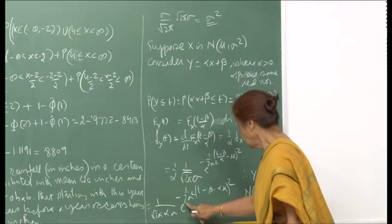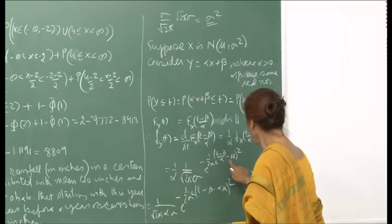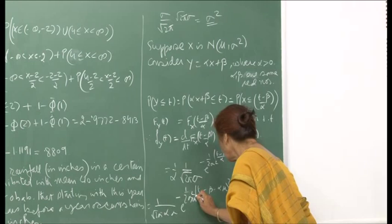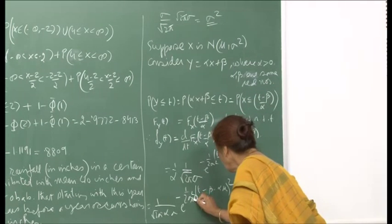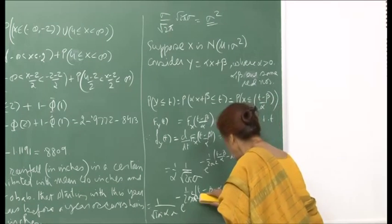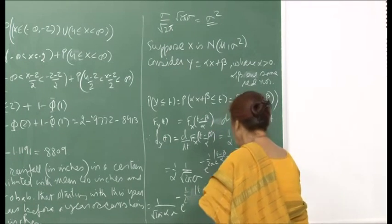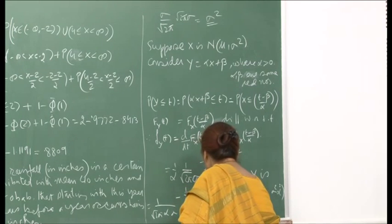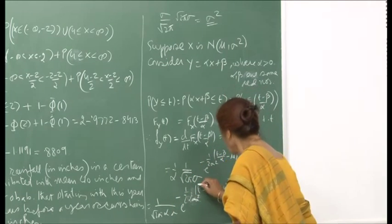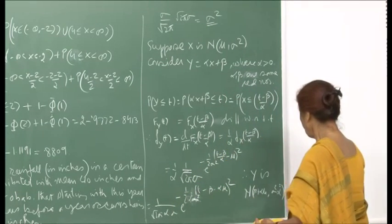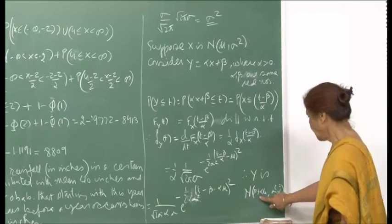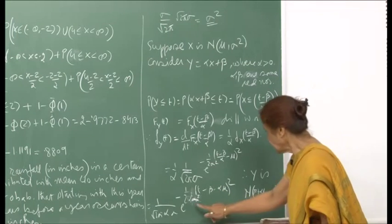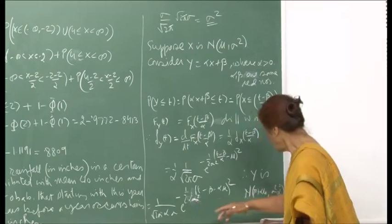When you substitute and write down the expression, it will be (1/α) × (1/√(2π) σ) × e raised to minus (1/(2σ²)) × ((t − β)/α − μ)². Simplifying, this gives you (t − β − αμ)² in the numerator and 2α²σ² in the denominator. So by our definition of the normal PDF, the mean now becomes β + αμ and the variance becomes α²σ².